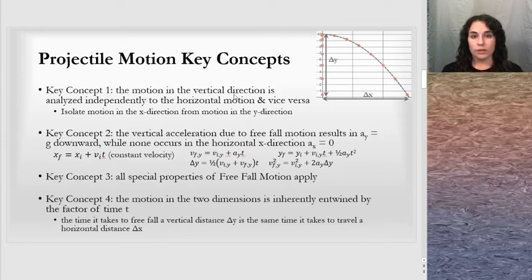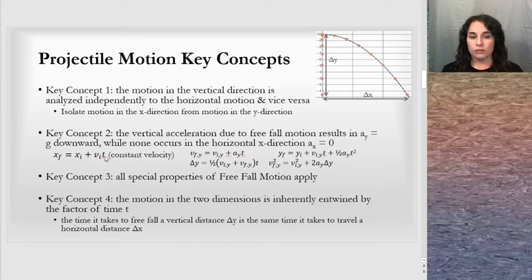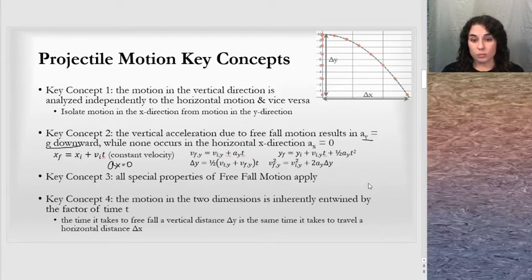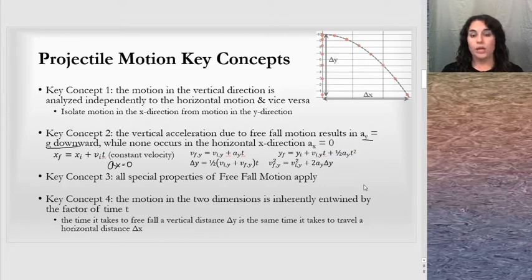The key concepts for projectile motion help us solve problems. Key concept one: the motion in the vertical direction is analyzed independently of the horizontal motion. Key concept two: we use a different set of equations for the x direction where acceleration is zero, and equations for the y direction where acceleration is gravity downward. Key concept three: all special properties from free fall motion apply, so everything from the one-dimensional lesson applies here.